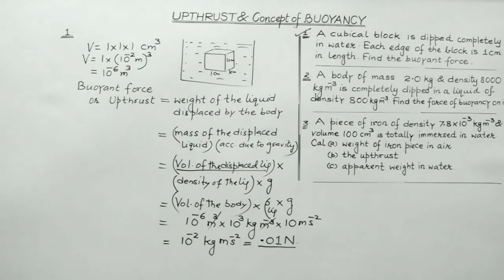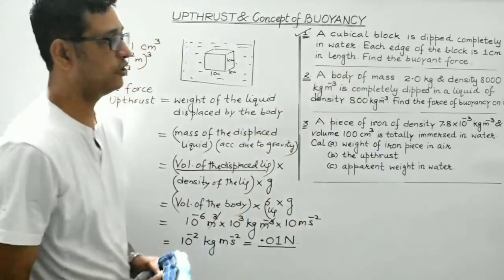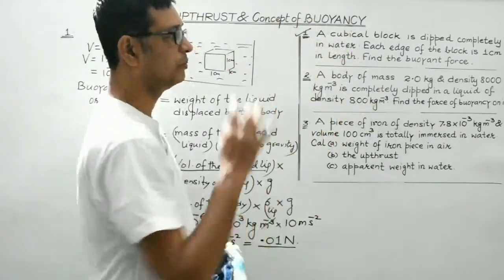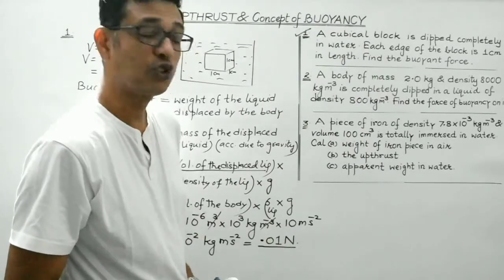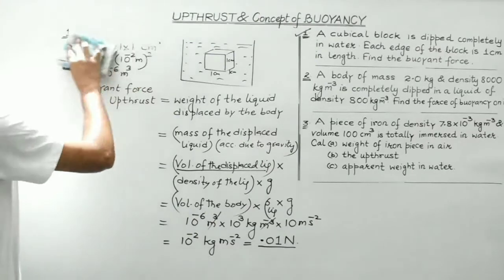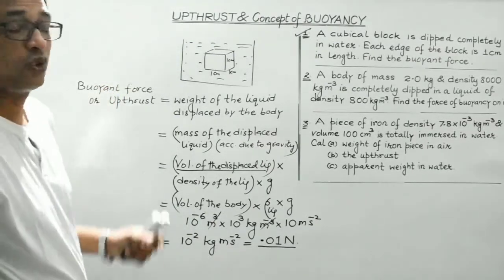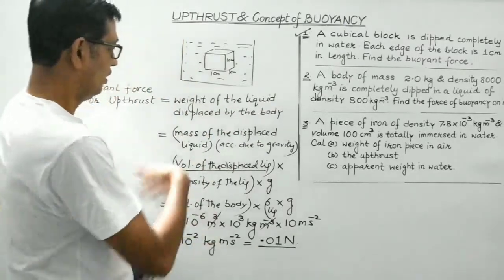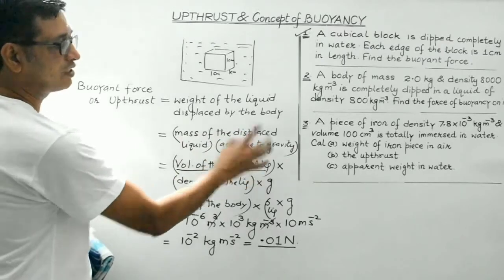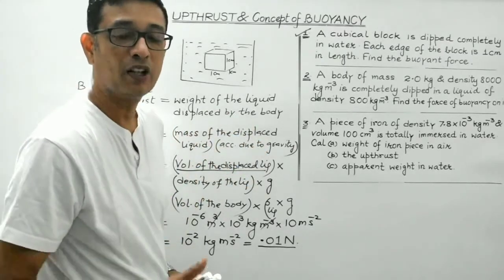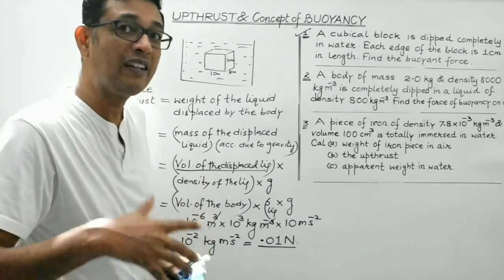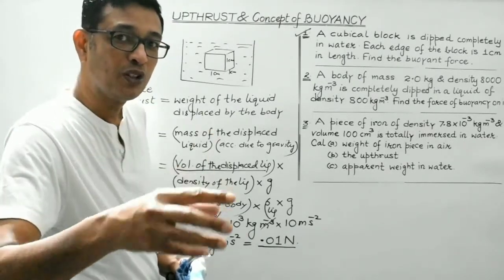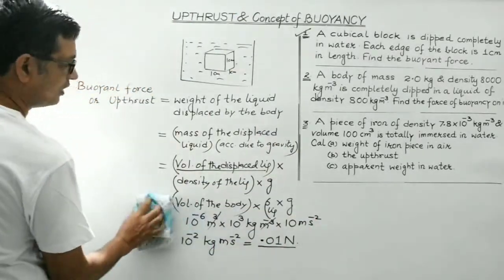Question number 2: a body of mass 2 kg and density 8000 kg/m³ is completely dipped in a liquid of density 800 kg/m³. Find the force of buoyancy. We use the same formula: buoyant force equals the weight of the liquid displaced by the submerged portion of the body. Weight = mass of liquid × g; mass of displaced liquid = volume of displaced liquid × density of liquid.